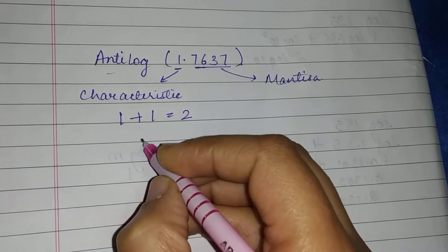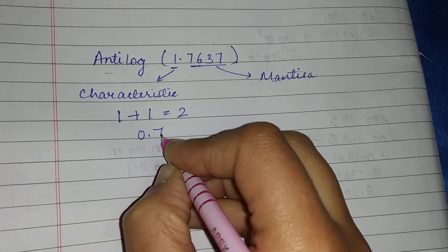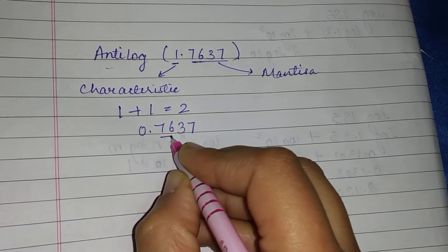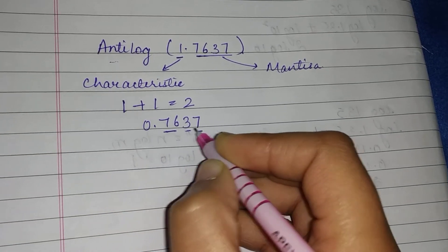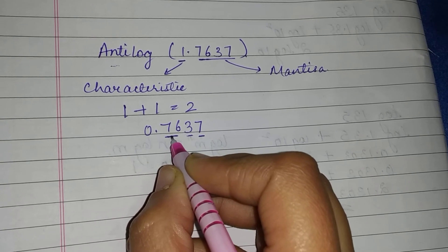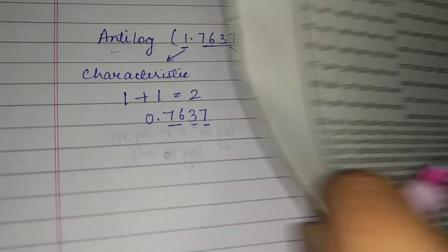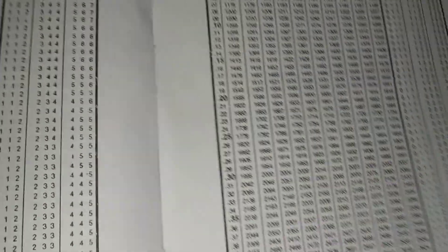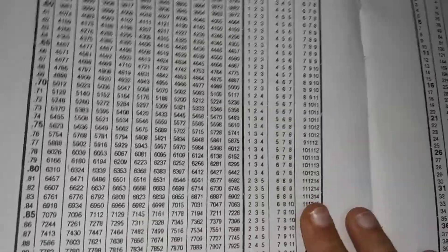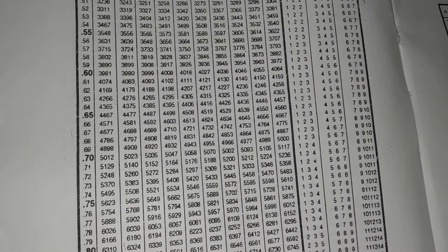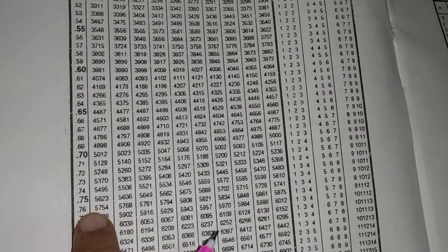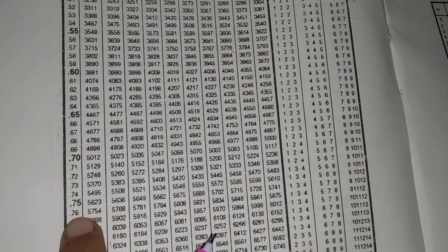After the decimal point we have four digits: 7, 6, 3, 7. We take the first two digits as the row value (0.76), then look at the third digit (3), and then the fourth digit (7). From the antilog table, we find the value corresponding to 0.76.